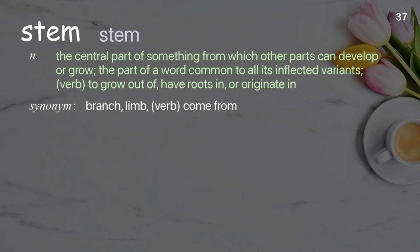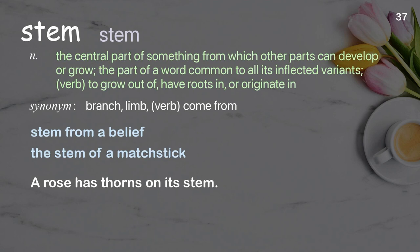Stem. The central part of something from which other parts can develop or grow; the part of a word common to all its inflected variants. Verb: to grow out of, have roots in, or originate in. Examples: Stem from a belief. The stem of a matchstick. A rose has thorns on its stem.